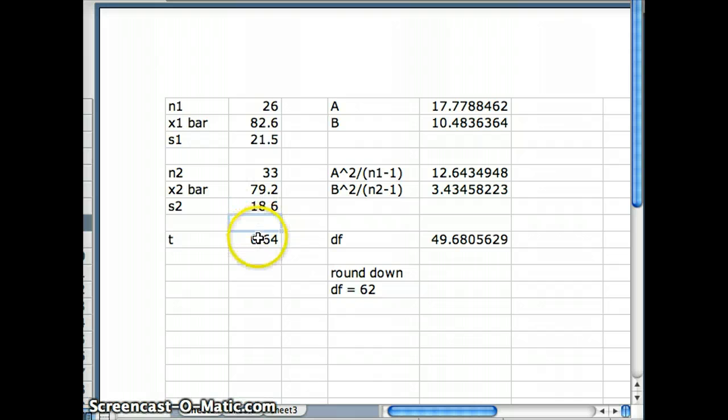And s₂ is 18.6. We do all that. We get a test statistic t of 0.64. We get degrees of freedom of 49.68. So if we round down, we're going to say that our degrees of freedom will equal 49.